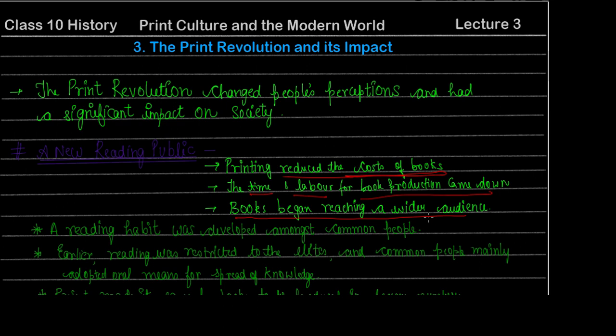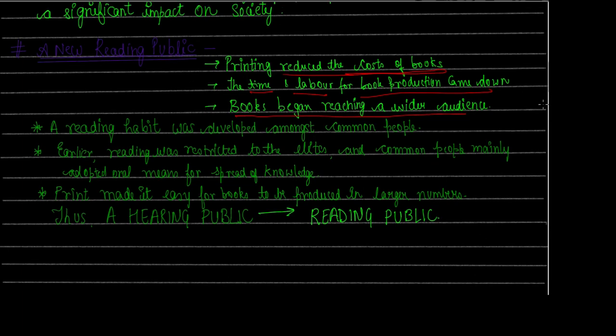Those who were common people, those who were not able to access books because they did not have enough money — because books became cheaper, they were now able to read books too. This is how the reading public increased. A new reading habit was developed, especially among the common people. Previously, the elite people — aristocrats, who were very few — read books, but common people did not have this habit because books were expensive.